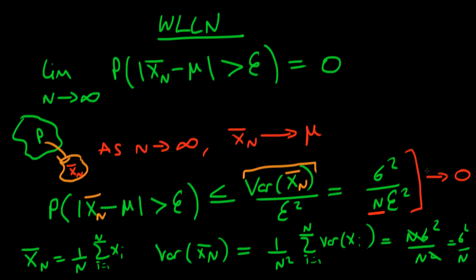So in a sense, we have just proved the weak law of large numbers, which says that as n tends to infinity, the probability that my sample mean differs from the population mean by some amount ε has to be equal to zero.